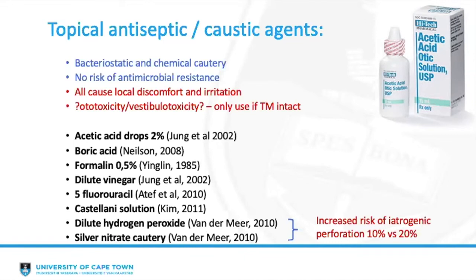Both hydrogen peroxide and silver nitrate cautery, despite being relatively effective, were shown by Funamura in 2010 to carry an increased risk of iatrogenic perforation of the tympanic membrane at 10 and 20% respectively, and are therefore very rarely used today.